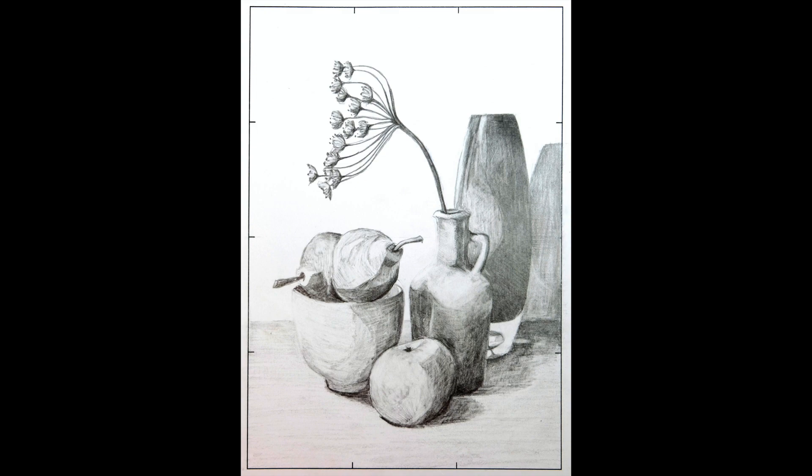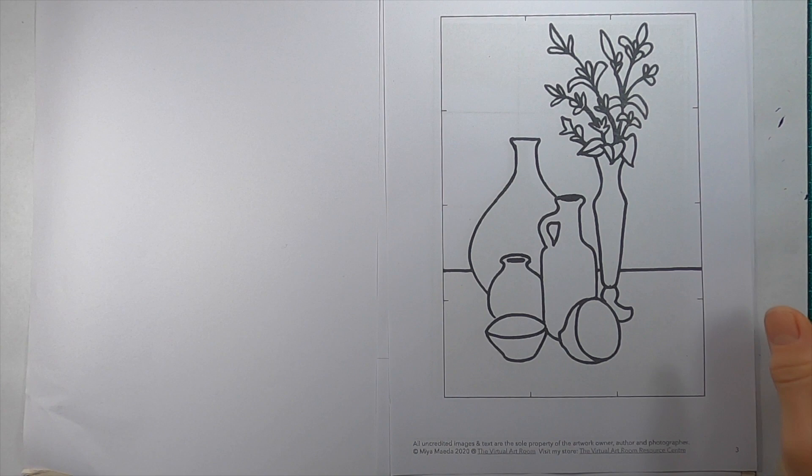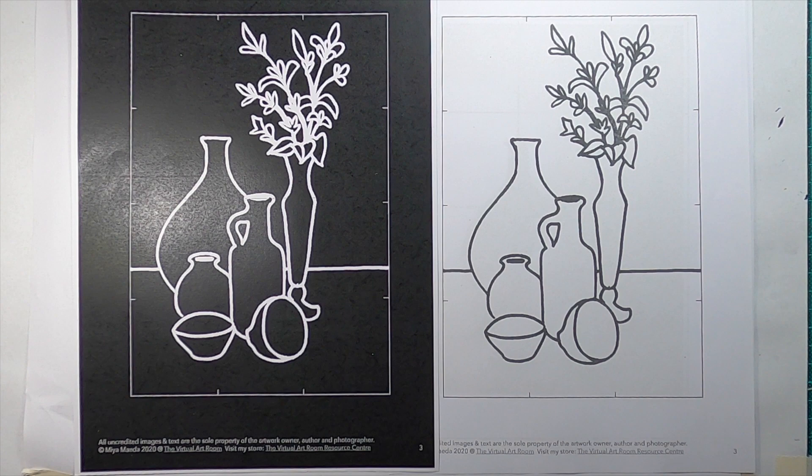I began this project by doing some warm up tonal drawings of the still life images. I then simplified the images into simple line drawings and then I took an inverse copy of the original to create a negative.